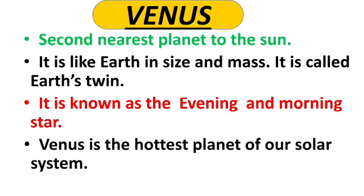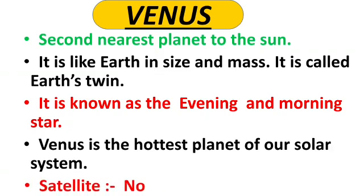Venus is the hottest planet in our solar system — it is much hotter than Mercury. And it has no satellite.